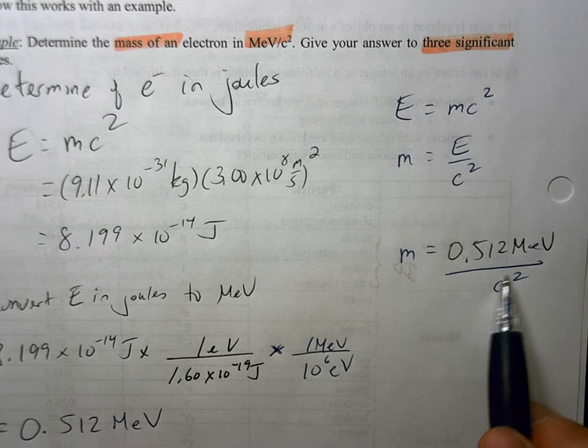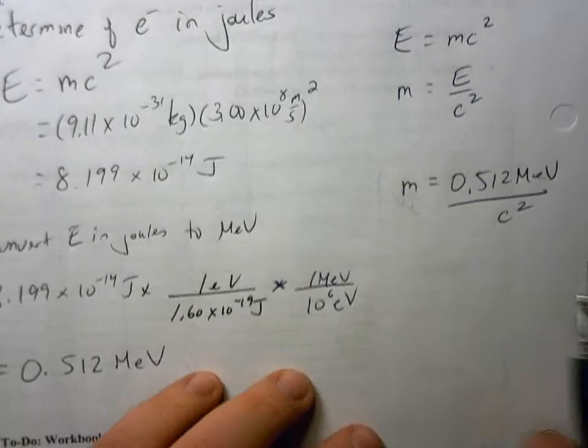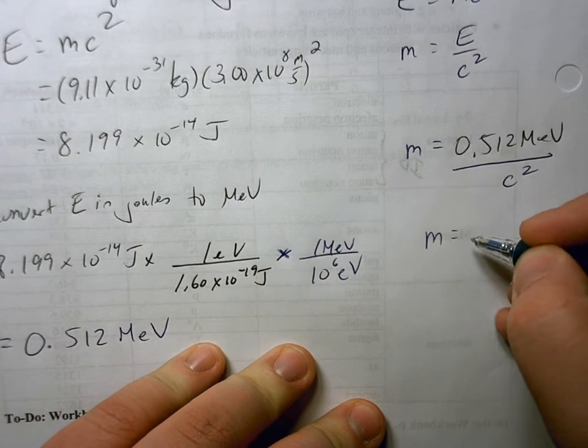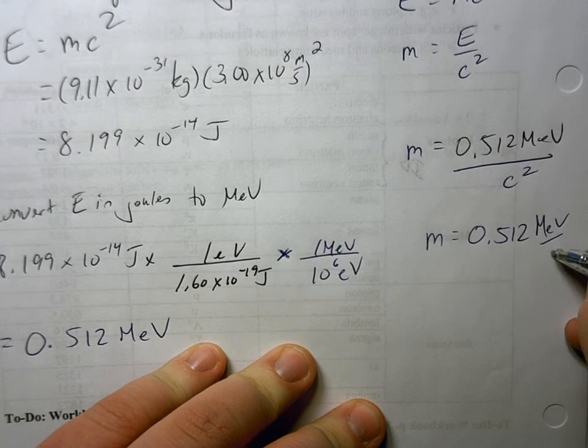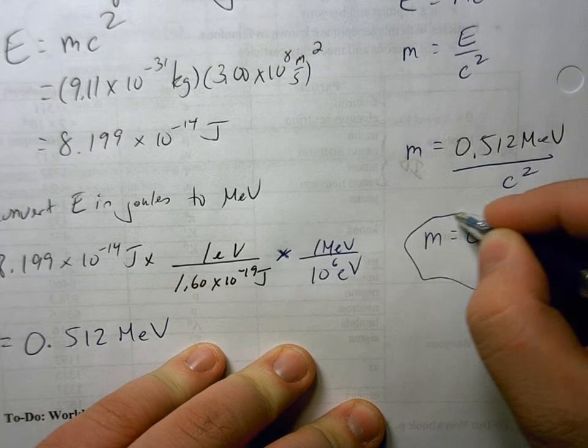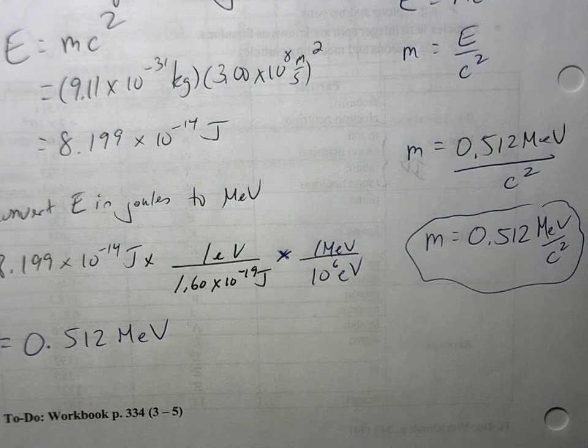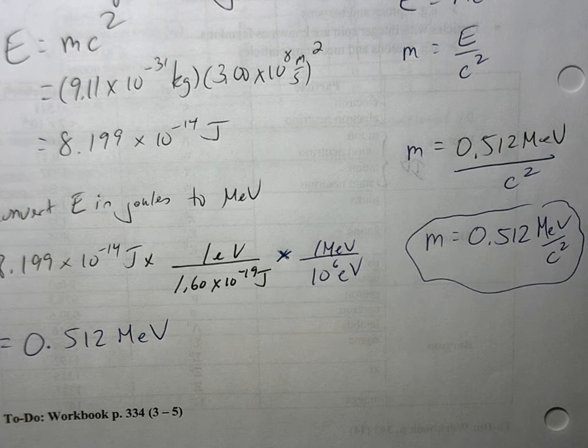And all we're going to do is we're going to say that the division by C squared, that's just going to be part of the units now. So we'd say that the mass of this thing is about 0.512 Mega Electron Volts per C squared. Really, what you're finding here, what this represents, is this represents the energy associated with that particle.